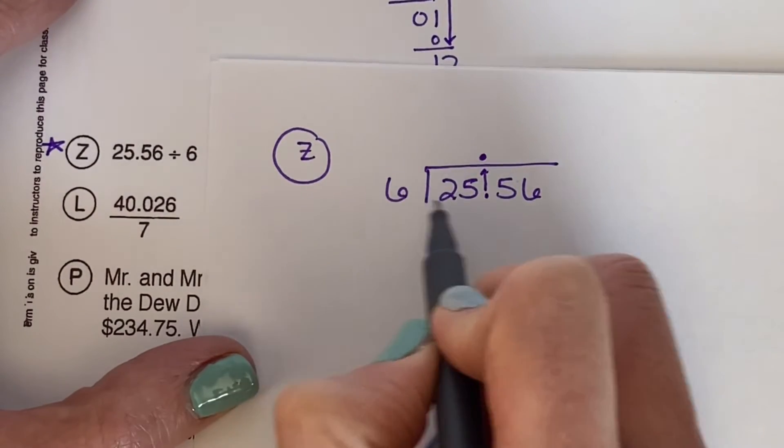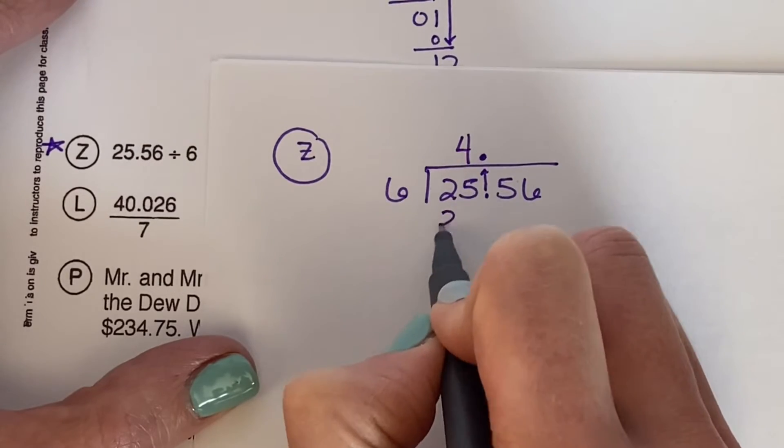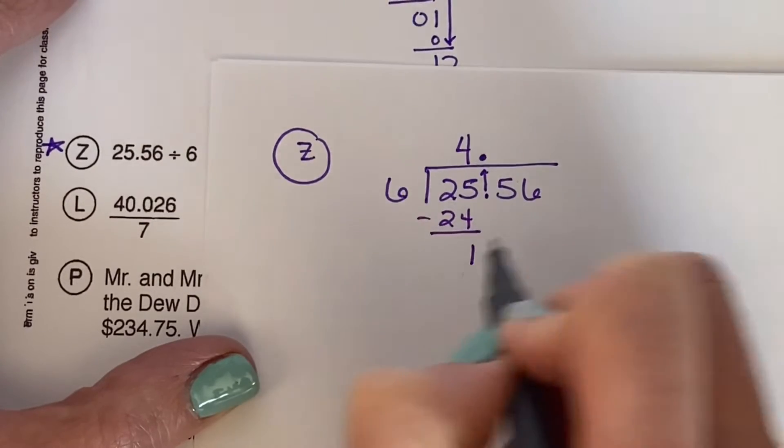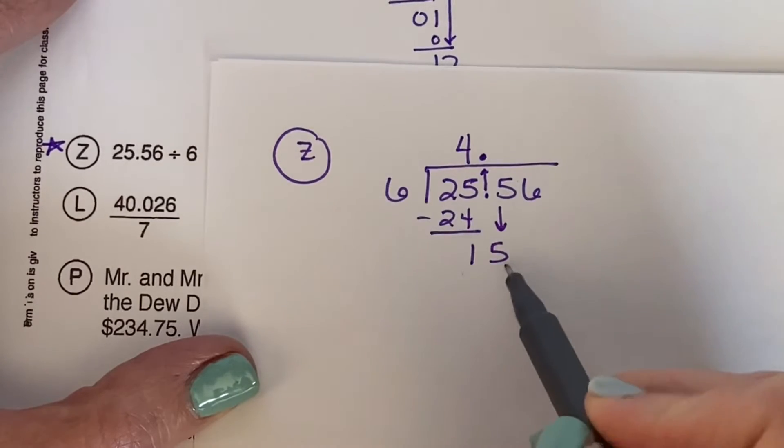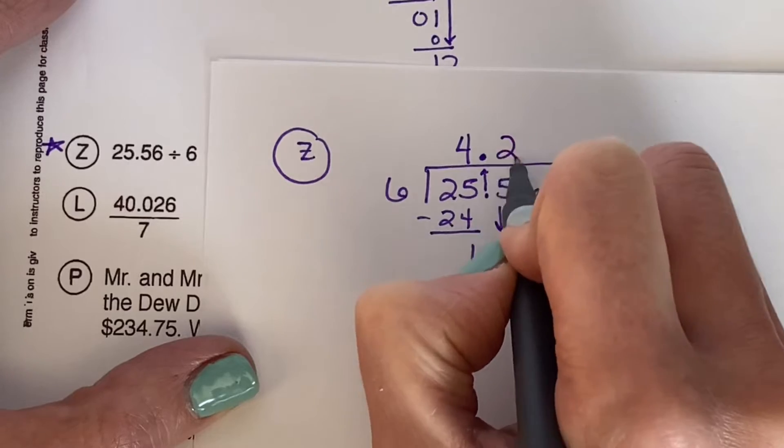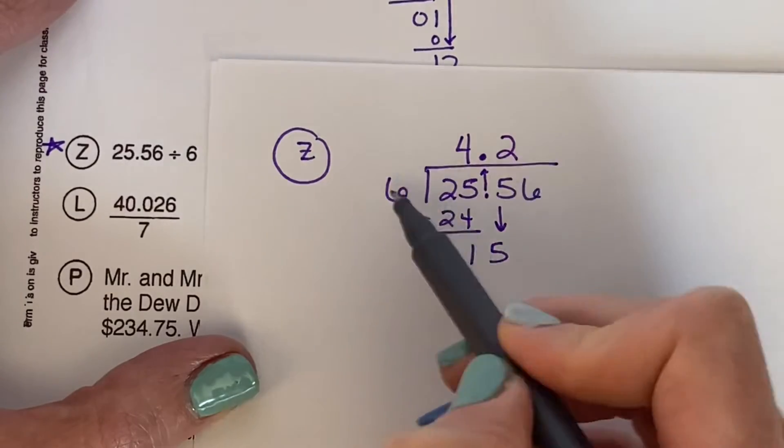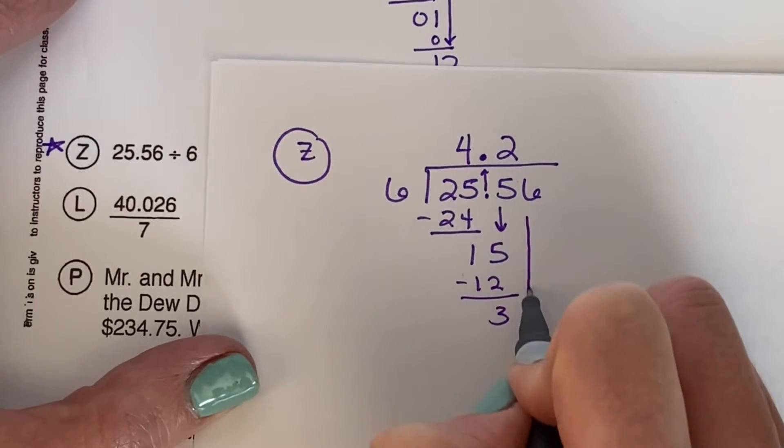How many times does 6 go into 2? Nope. 6 into 25? Aha. 4 times. 4 times 6 is 24. Bring down our 5. How many times does 6 go into 15? Two times. Bring that straight up. Now we're dealing with our tenths value. 2 times 6 is 12. Bring down your 6.